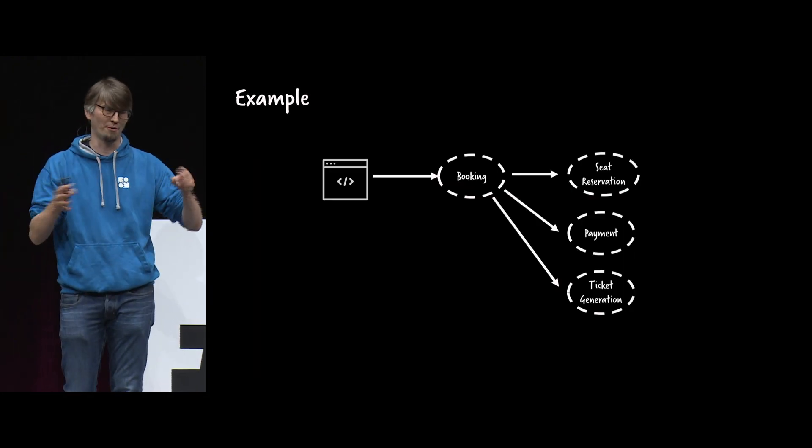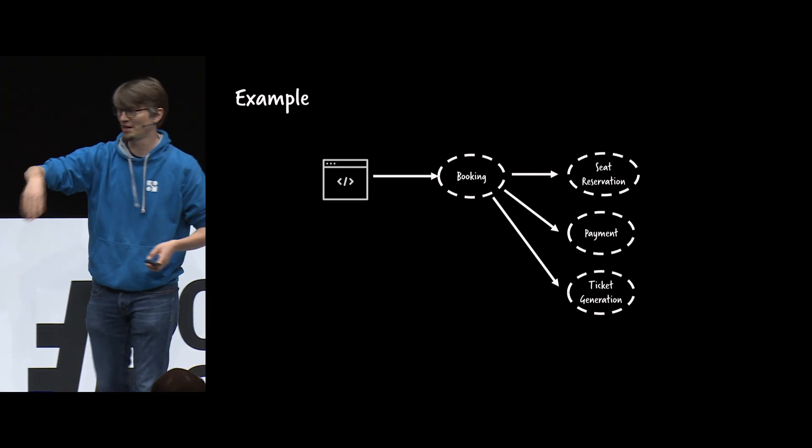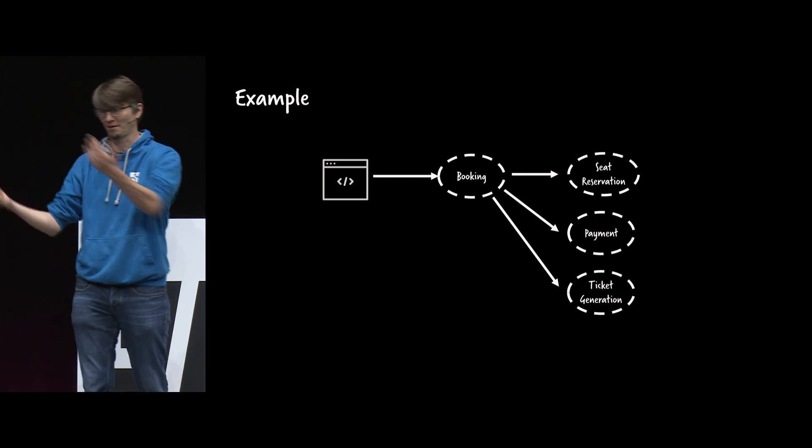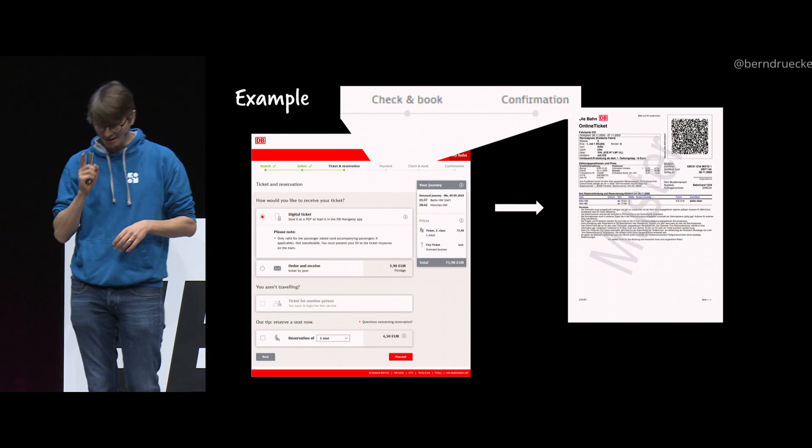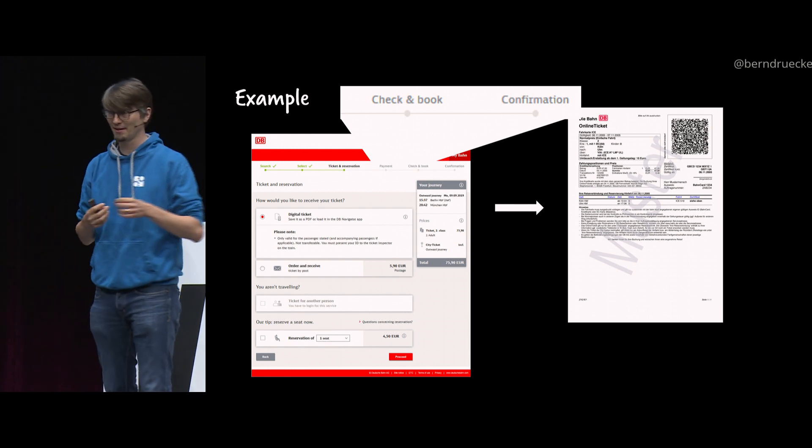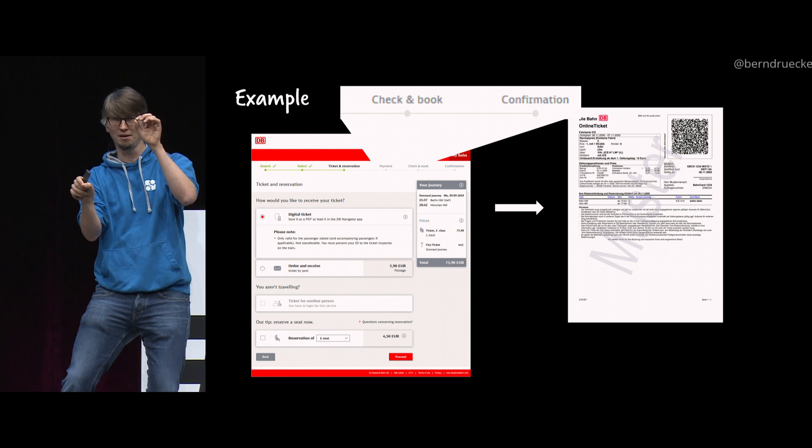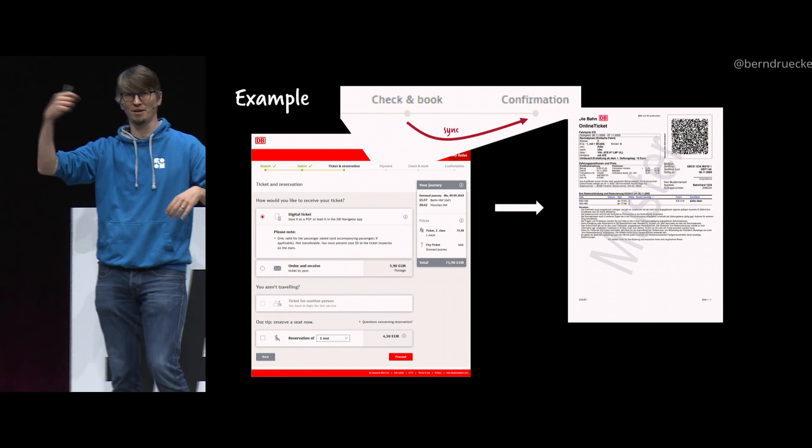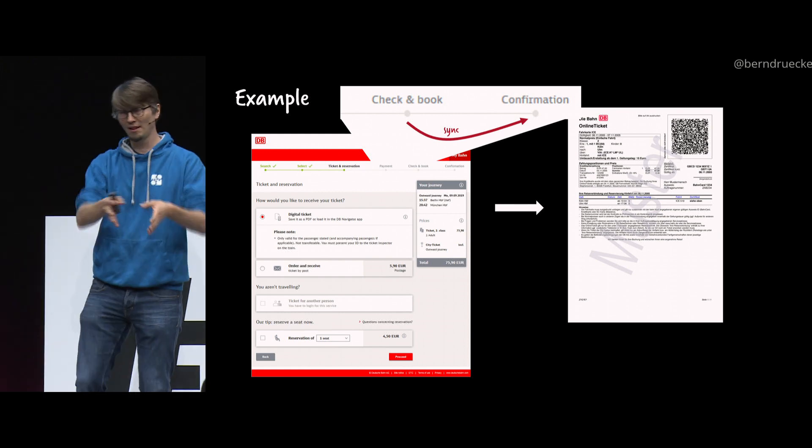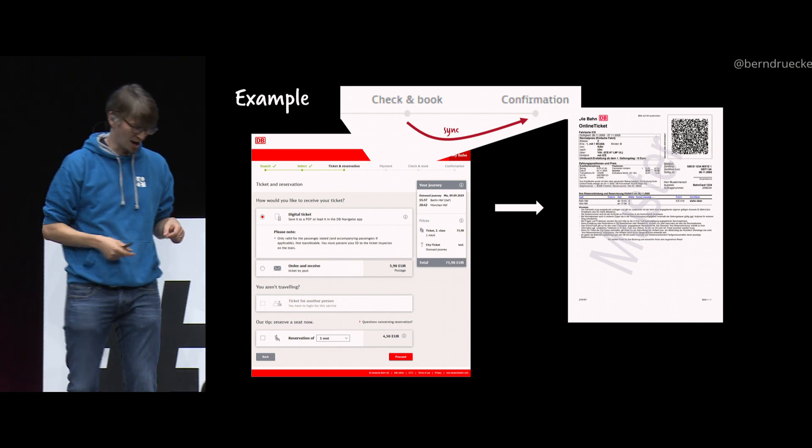In the background, normally, a couple of services are required in order to do that, for example, we have a booking service, and probably that uses something for the reservation, for the payment, and for actually generating that PDF ticket, right? That could be like the situation. The thing is, which is pretty interesting, if you look at that, it always puzzles me, but it's still like that, so if you go from check and book, click on the proceed button, then it's a synchronous behaviour on the UI, you really see the loading wheel for quite a bit, until everything is done, and then the PDF directly opens up in your browser.